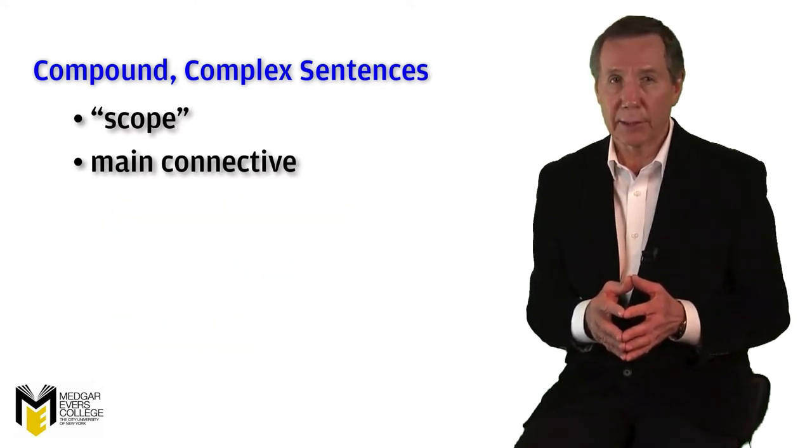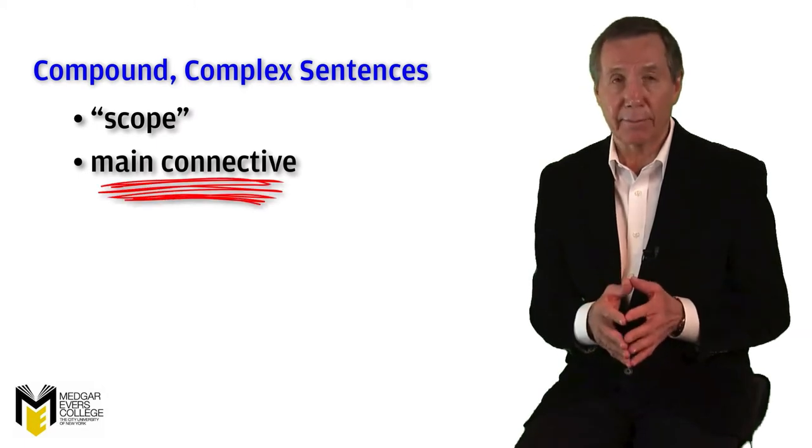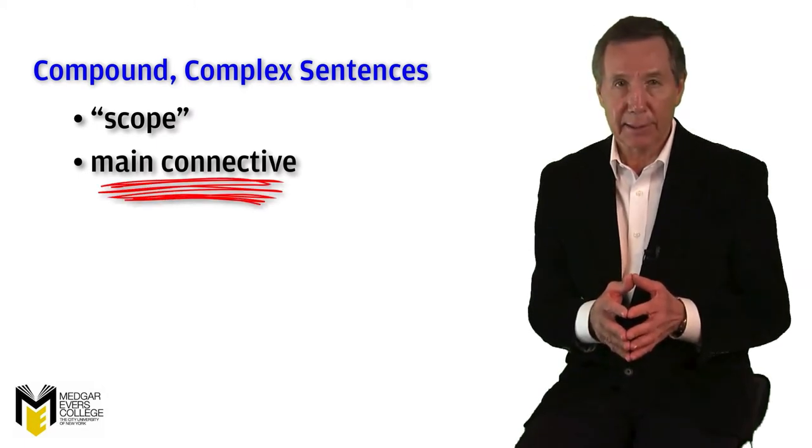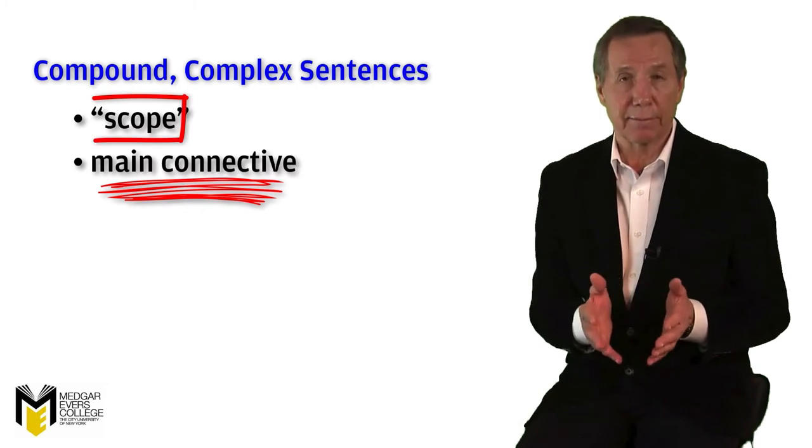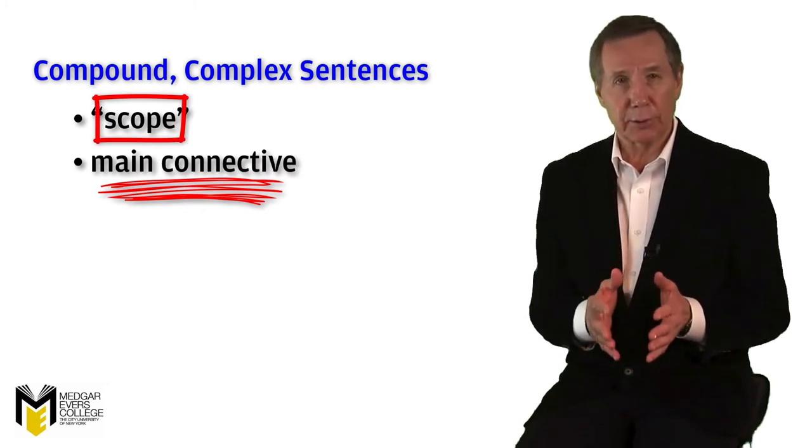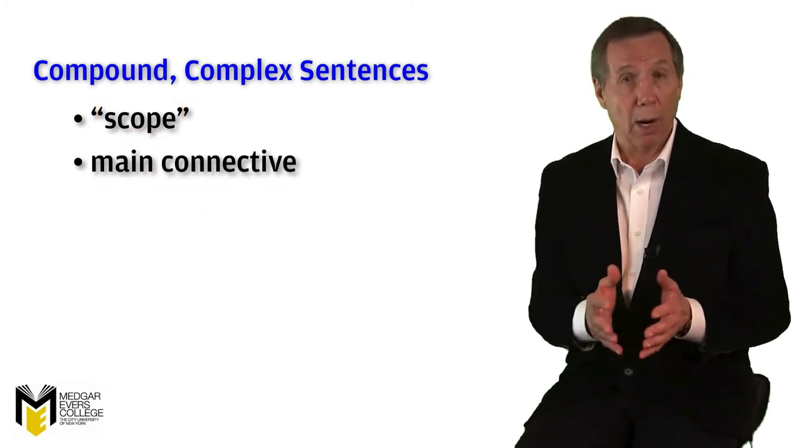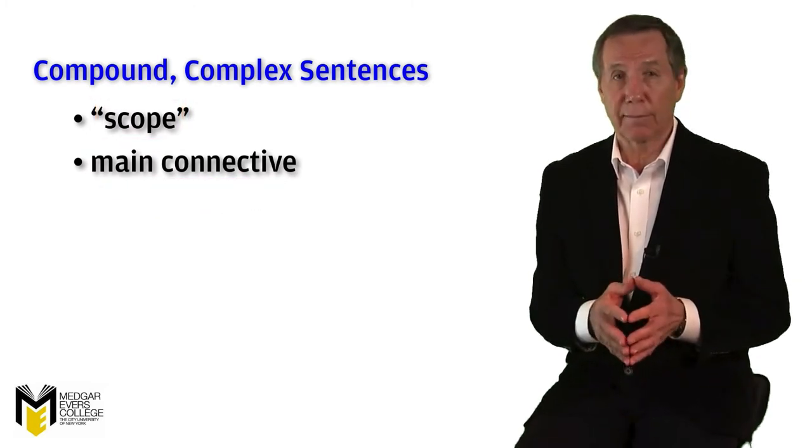Every sentence in sentential logic should have an unambiguous main connective and every connective in a sentence should have a clearly defined scope. To make the scope of a connective easier to determine, sentential logic uses certain widely accepted notational conventions.